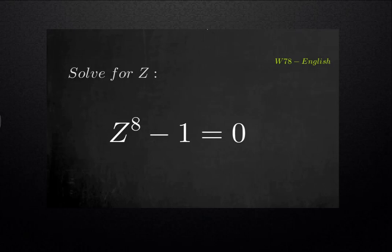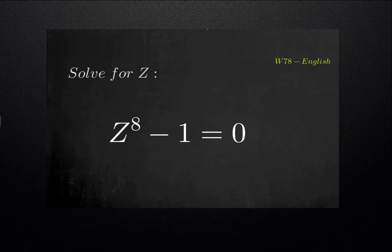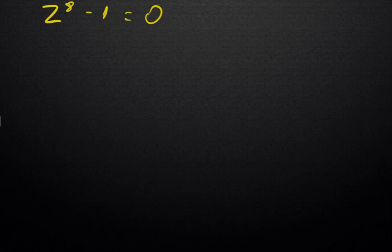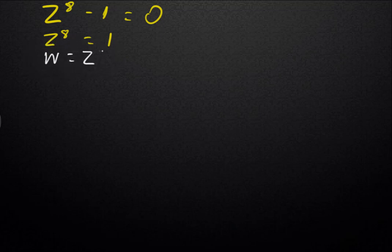Greetings everyone. Today we have a simple complex number problem — we have to solve the equation z to the power of 8 minus 1 is equal to 0. Instead of going through a lot of powers, we are going to use complex numbers. If I rewrite it: z to the power of 8 minus 1 is equal to 0, we need to find a way to say that z to the power of 8 is equal to 1, with z to the power of 8 being a complex number — let's call it w.